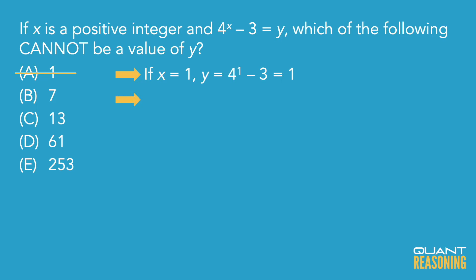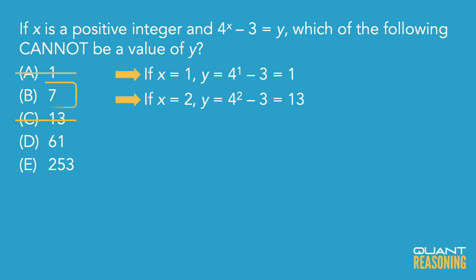The next option is x equals 2, which makes 4 to the power of x equal to 16. Subtracting 3 from that, I get 13, which is answer choice C. But what about answer choice B? I didn't skip any options for x — I tried x equals 1, then I tried x equals 2. This tells me that B is impossible. We can't get B when x is a positive integer, so B must be the correct answer. We can pick it and move on.